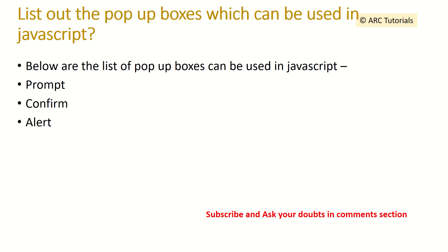What are some of the ways you can take input from the user? Some of the pop-up boxes available in JavaScript are prompt, confirm, and alert. These are the three different types of boxes you can use for interaction with the user.